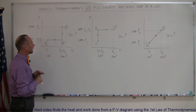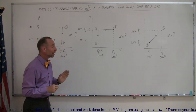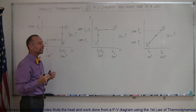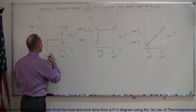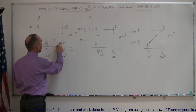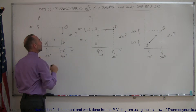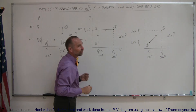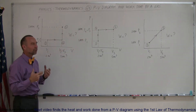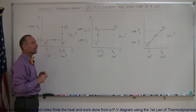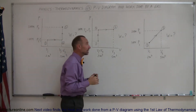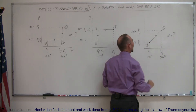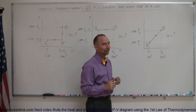Notice that in the first example and the second example, in both cases the beginning state and the end state are the same — the gas just gets there in a different way. Here, first the gas is expanded in volume and then the pressure is increased. In this case, the pressure is increased first and then the volume is expanded. And finally, here we have a case where we go directly from state one to state three in a diagonal line — what is the work done in that case?